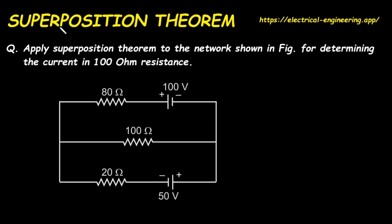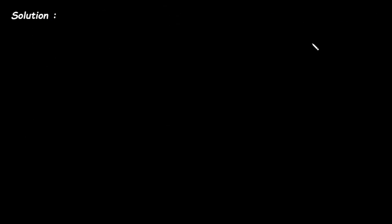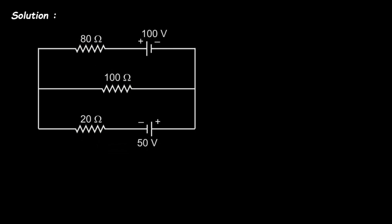In this video, we will see a problem on superposition theorem. Apply superposition theorem to the network shown in the figure to determine the current in the 100 ohm resistance. For this circuit, we have to find the current through the 100 ohm resistance using superposition theorem.